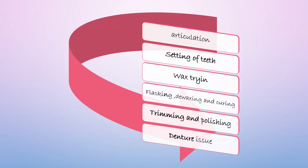Once jaw relation is recorded and centric relation achieved, the rims are mounted on an articulator, then teeth setting is done. After that, there is the wax try-in — the trial denture is tried in the patient's mouth and checked for aesthetics, phonetics, and occlusion. If the patient is satisfied, the flasking procedure is carried out, followed by de-waxing, curing, trimming and polishing, and finally the denture is delivered to the patient.